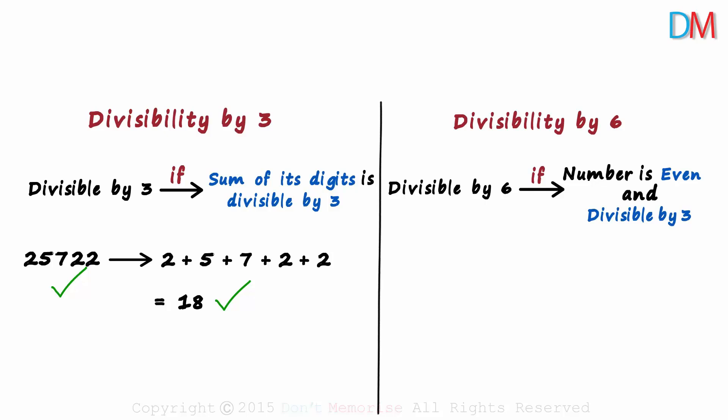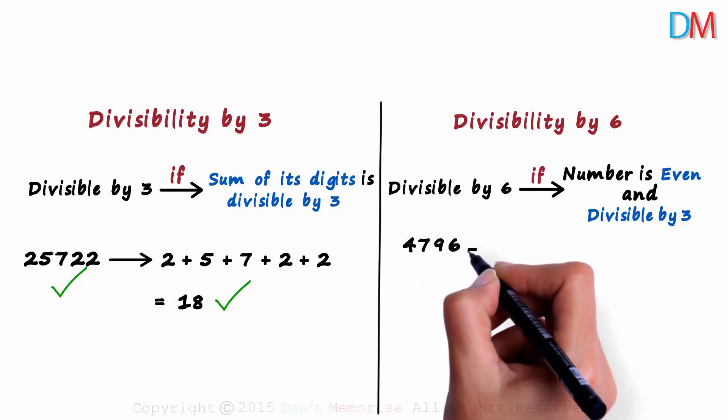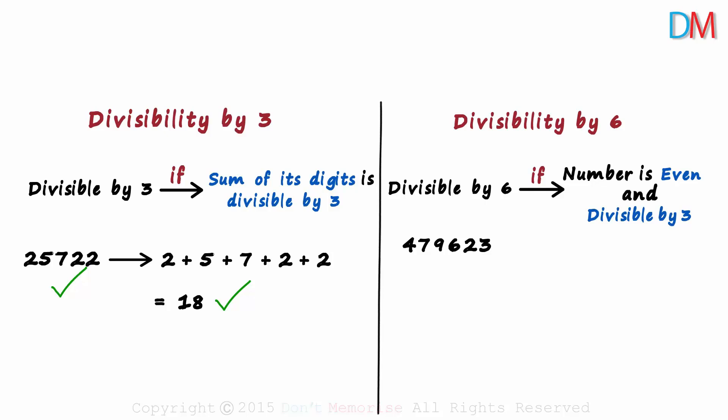Since the test is a bit different, we will look at two examples. The first one is 479,623. Is this number even? Since the last digit is not divisible by 2, this number is not divisible by 2. Hence this number is not even.